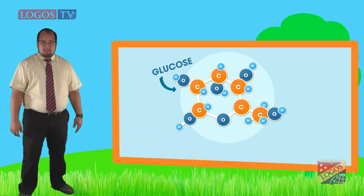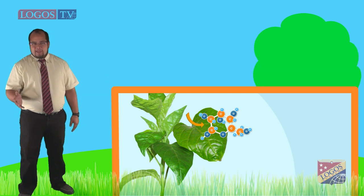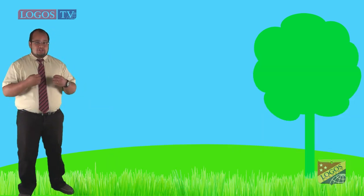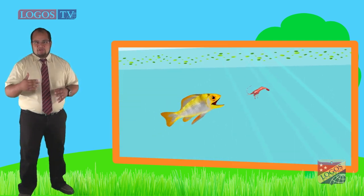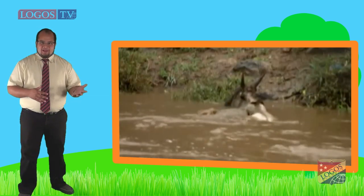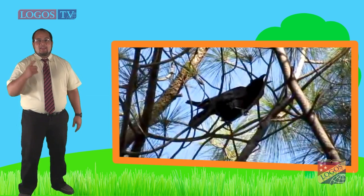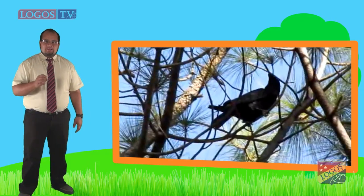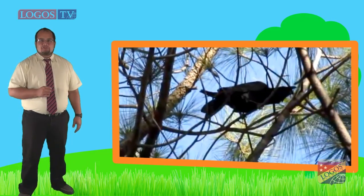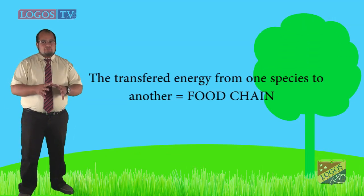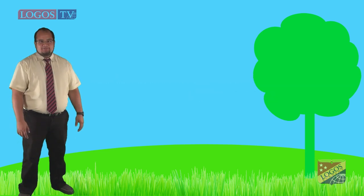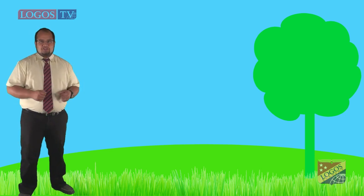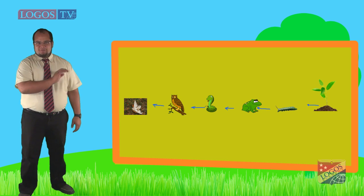On the other hand, animals get energy from food they eat. Some animals eat plants, some animals eat other animals, and some other animals eat animals and plants. When an animal eats, it gets energy from the food. The transfer of energy from one species to another is what we call a food chain. In a food chain, some living things are producers of energy.